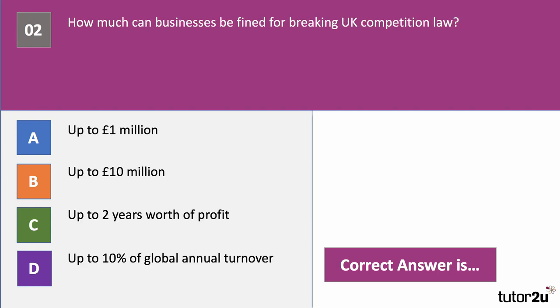Question two: how much can businesses be fined for breaking UK competition law? Is it up to £1 million, up to £10 million, up to two years' worth of profit, or up to 10% of global annual turnover? The answer is D — up to 10% of global annual turnover. Firms found guilty of price fixing, market sharing, or other collusive cartel behaviour modelled in game theory face this penalty. Companies that blow the whistle on collusion stand to receive a much more lenient penalty.